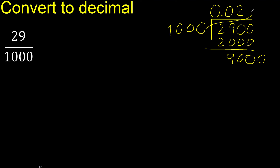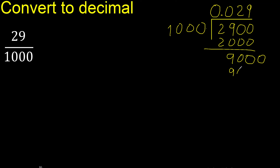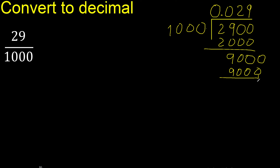1000 multiplied by which number? Multiply by 9 is 9000 — exact. Subtract is 0. Therefore finish.